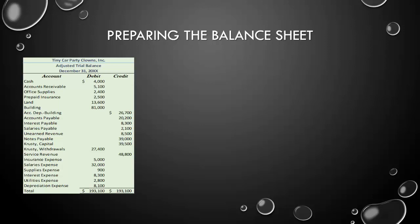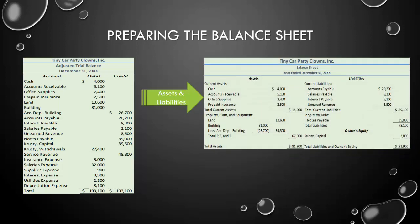After finishing the statement of owner's equity, the last financial statement is the balance sheet. All assets and liabilities amounts come straight from the adjusted trial balance. The only thing you need to do is separate them by class: current versus non-current. The distinction is one year. For assets, if it's something we expect to use up or convert to cash within the next year, it goes under current assets. If it will take more than a year, it goes into non-current assets.